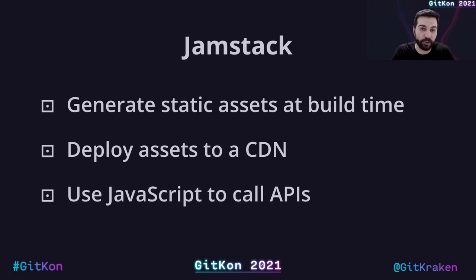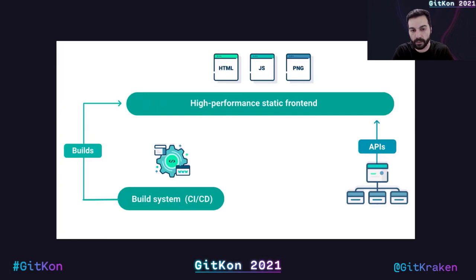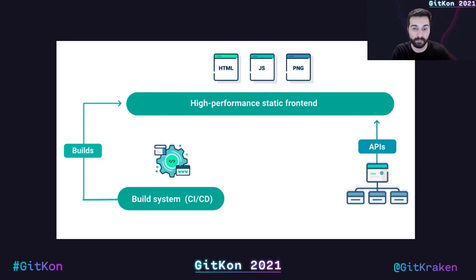If we need some dynamic content, we should use JavaScript to call APIs to generate that content. Those are the principles to follow when developing an application using the JAMstack approach. The build system generates static assets stored in a CDN, and if dynamic content is needed, JavaScript calls APIs — so we won't need any web server to execute processes or generate dynamic content on the fly.